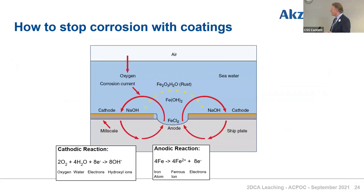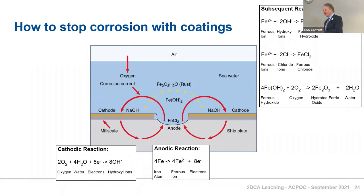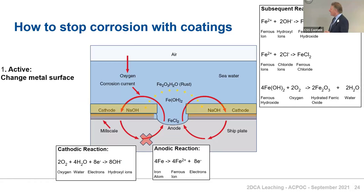So how do you stop corrosion with coatings? There are really two ways. What I'm going to focus on today is active methods. We've got to understand there are a number of reactions happening. We've put our coating down — you can see our coating on the right-hand side — and something's going to come out of it that's going to interfere with the metal surface, so we no longer have the bare metal surface exposed.